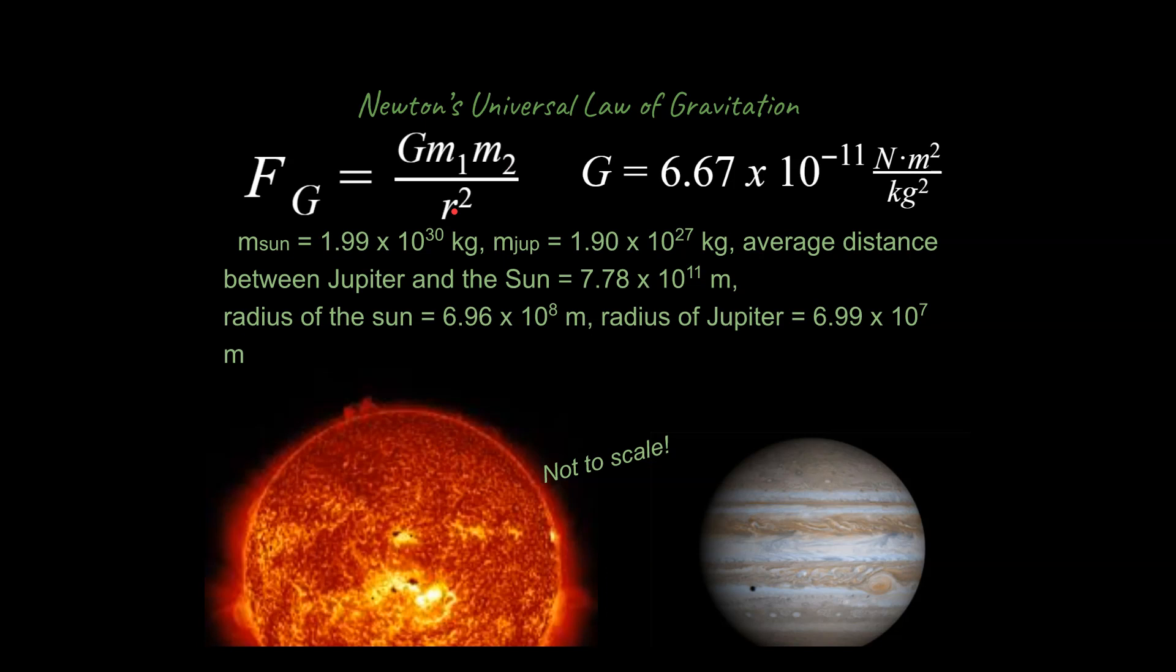and r is going to be the distance between the center of both objects. G is a constant over here. I want you to notice that it is a very small number, times 10 to the negative 11th. Gravity is actually a very weak force; it only becomes significant when masses are very large, like the mass of the Earth holds us to the Earth.